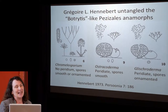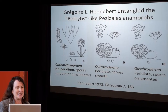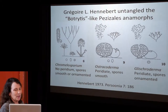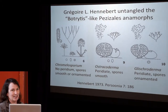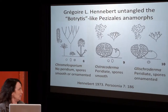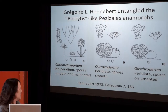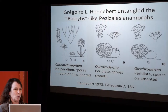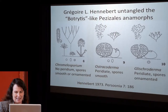Gregoire Hennebert untangled the Botrytis-like Peziza lesianomorphs. The three I want to talk most about today are Chromalosporium, Ostracoderma, and Gliscoderma, which he drew beautifully and helped to distinguish by virtue of whether they had a peridium, what the branching looked like, and whether the spores were smooth or ornamented.